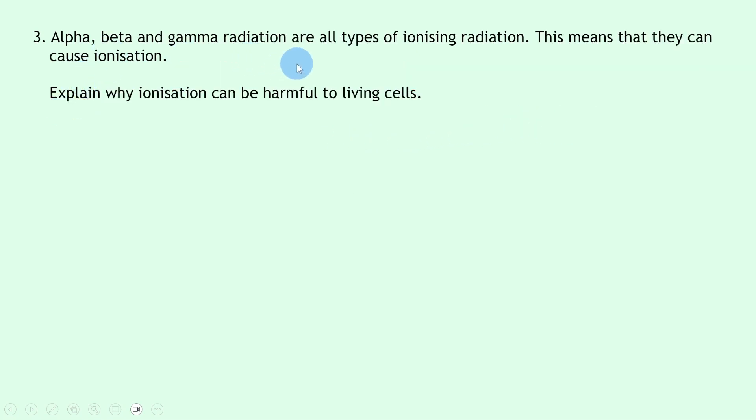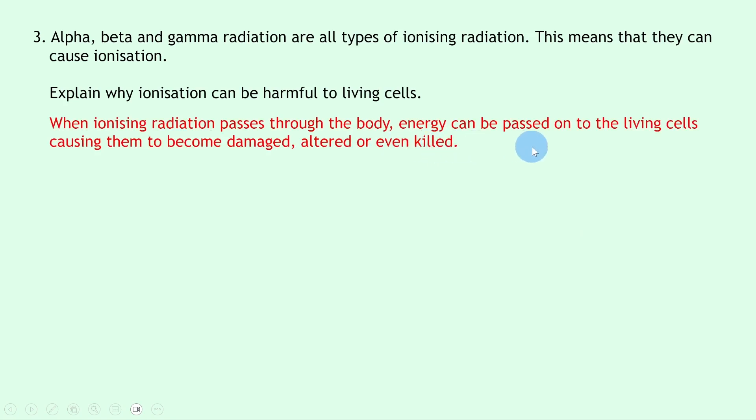Question three says alpha, beta, and gamma radiation are all types of ionizing radiation. This means they can cause ionization. Explain why ionization can be harmful to living cells. Well, we can say that when ionizing radiation passes through the body, energy can be passed on to the living cells, causing them to become damaged, altered, or even killed.